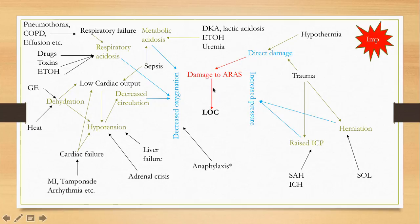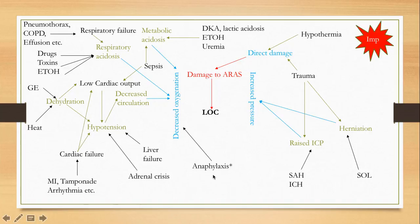On the other hand, decreased oxygenation is how most systemic problems cause loss of consciousness. For example, anaphylactic shock causes decreased oxygenation because patients cannot oxygenate well when there is obstruction in the upper airway. It's also a two-fold mechanism — not only is there airway obstruction, but also massive vasodilation from the chemicals and toxins released with anaphylaxis itself, leading to very poor oxygenation and loss of consciousness.